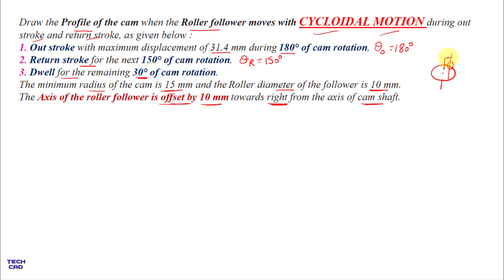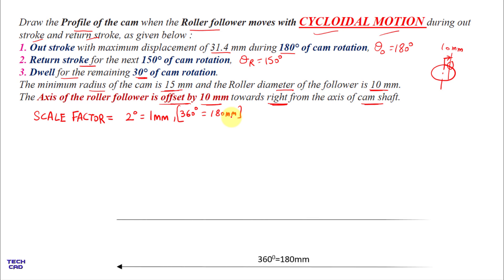Let's start the question. First of all, you have to make the displacement diagram of the roller follower, and for that you have to take the scale factor. I am going to take scale factor as 2 degrees equal to 1 mm, so if I'm making an angle of 360 degrees then I will make a linear line of 180 mm. So let's make a line of 180 mm — it represents 360 degrees. Then make a vertical line of 31.4 mm, which is the maximum displacement of the follower.